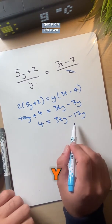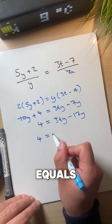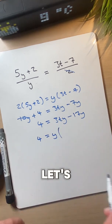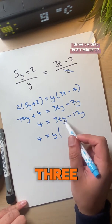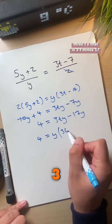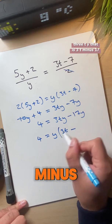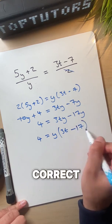Now we want to get y on its own, right? So let's put 4 equals y and then put the brackets there. So what do we have to multiply y by to get 3ty? That is 3t minus 17, correct?